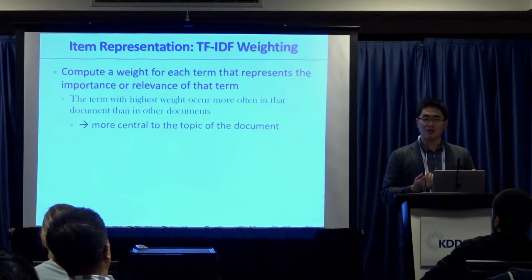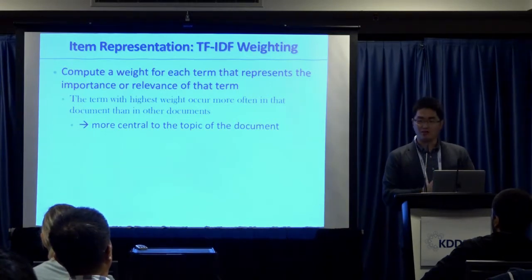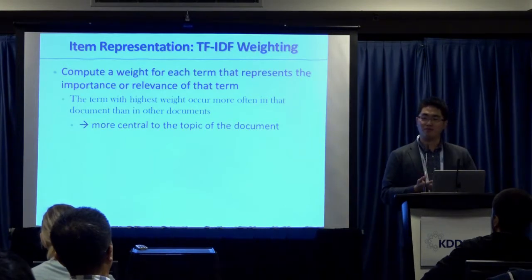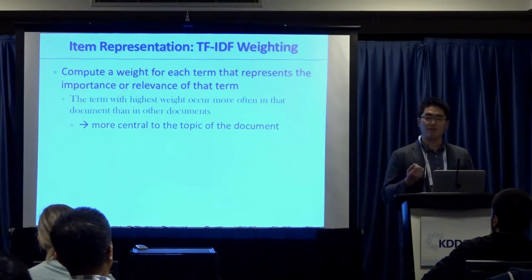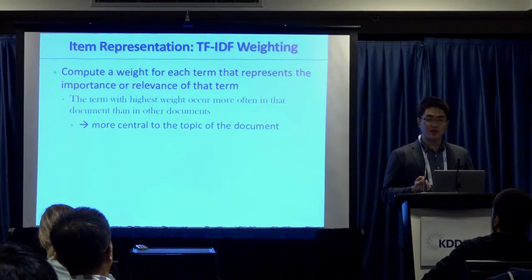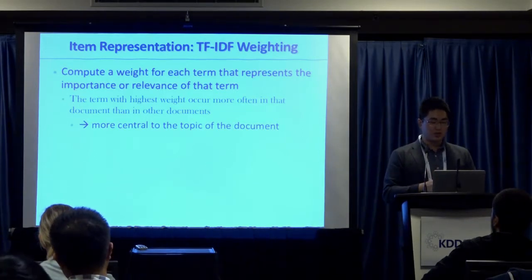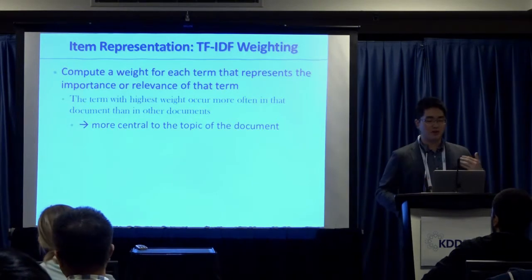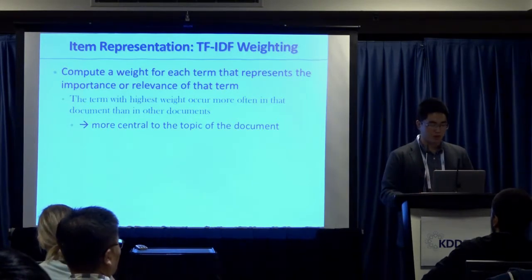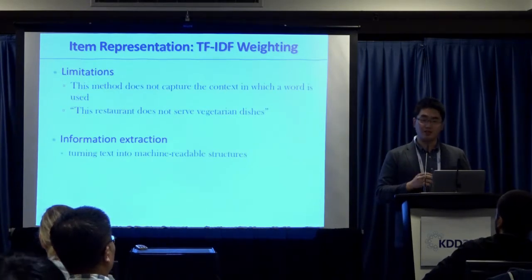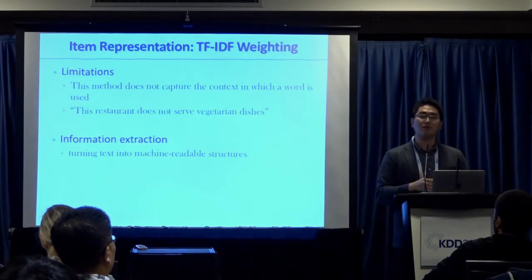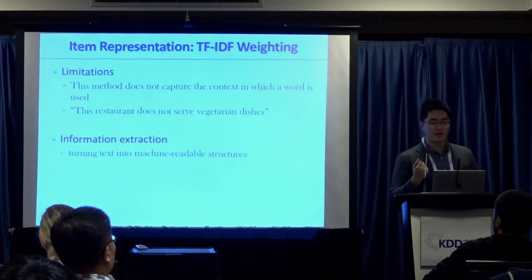A very simple example: people commonly use TF-IDF weighting. TF-IDF assumes everything is broken into a bag of words, and uses term frequency and inverse document frequency to measure the importance of a term regarding an item. If a term's document frequency is low, it is more central to the topic of the document. There are lots of limitations — bag of words loses n-gram or phrase semantics, and it may not be the right semantic unit to use.